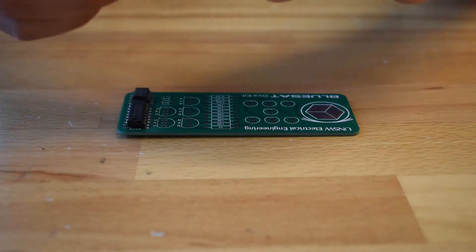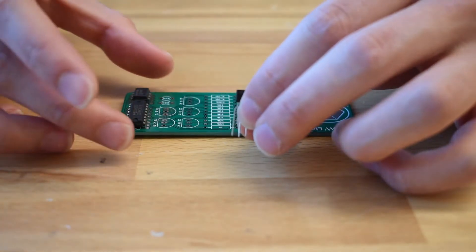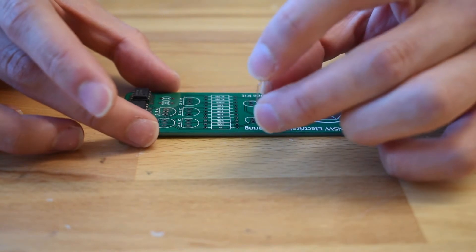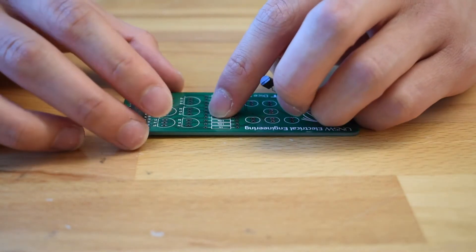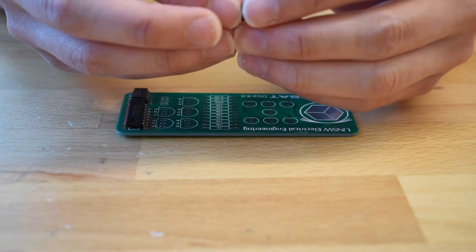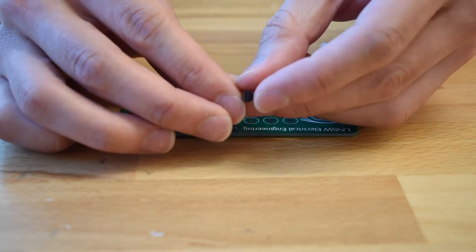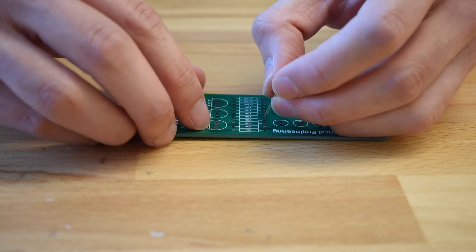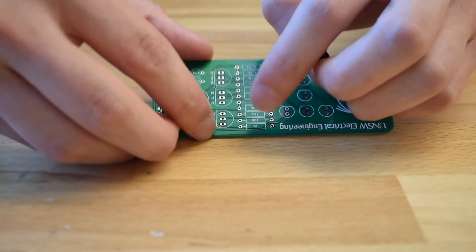Let's start with the row of three first. This is our transistor here. When placing this transistor in the board make sure to align the flat side of the transistor with the flat drawing on our board.